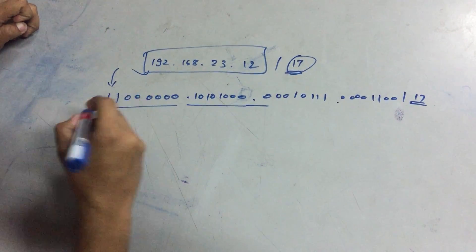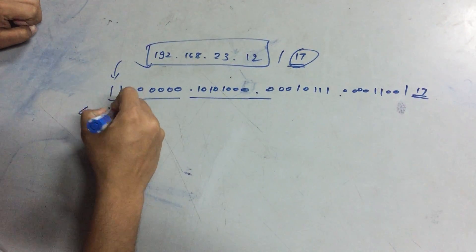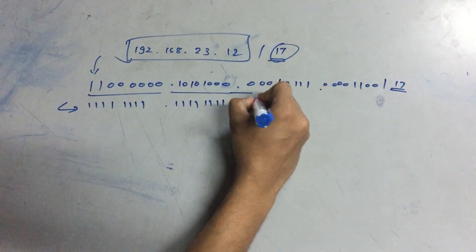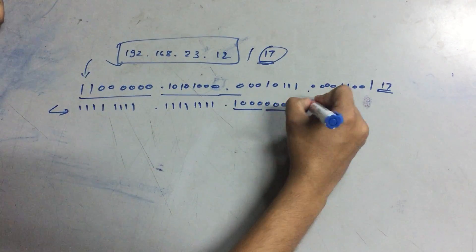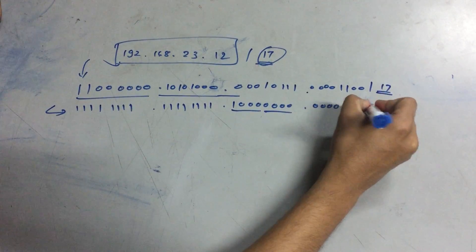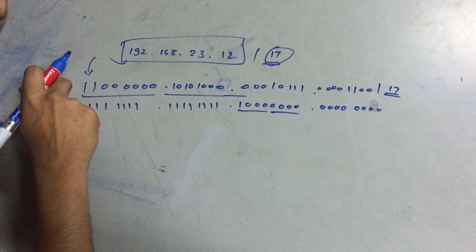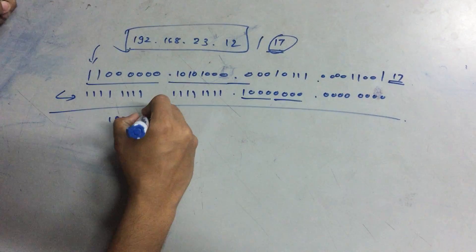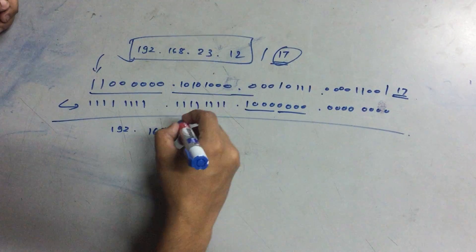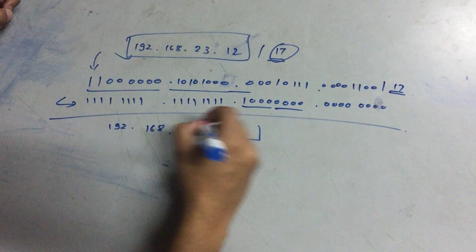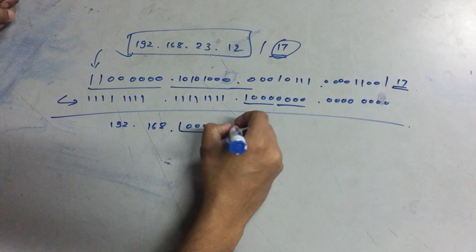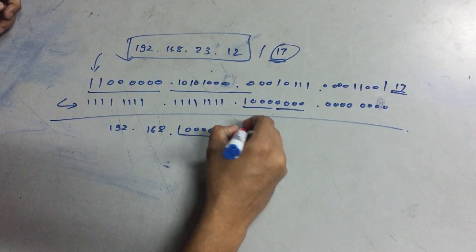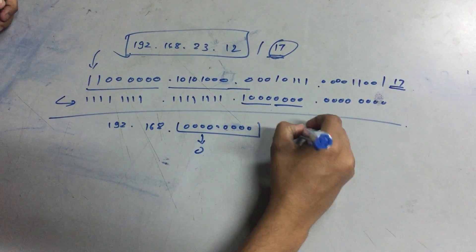So our network ID - first our subnet mask is calculated. ANDing subnet mask with IP address will give you the network ID. So our network ID stands to be 192.168, decimal of this which is 0, and decimal of this.